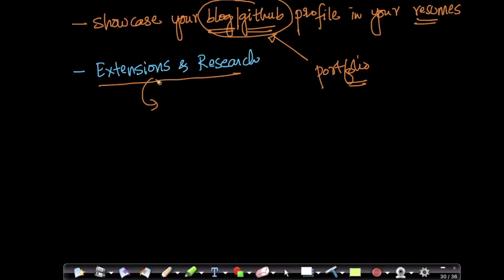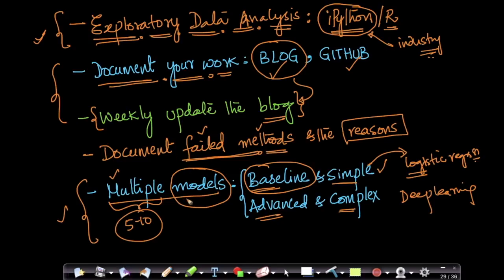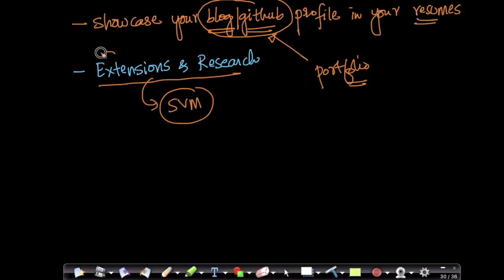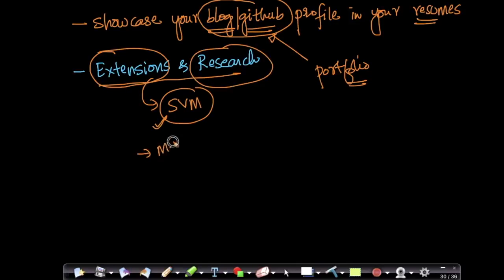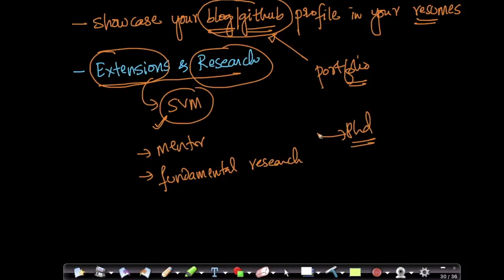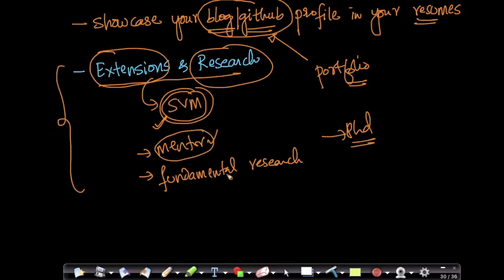With the right mentorship, you can extend what you've tried. For example, after applying SVM, because you've learned why it works and where it doesn't for your problem, you can extend existing techniques to do fundamental research. If you're at a top-tier university or have the right mentor, you can extend techniques, do fundamental research, and possibly publish. This is especially important for students looking to get into a PhD program.